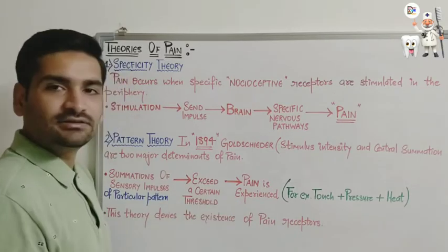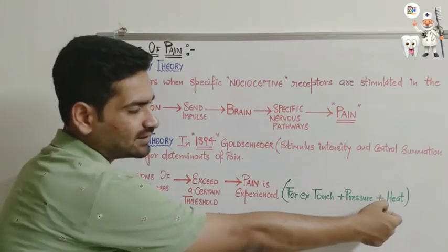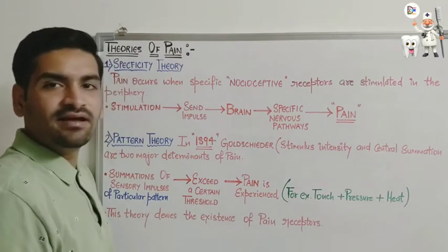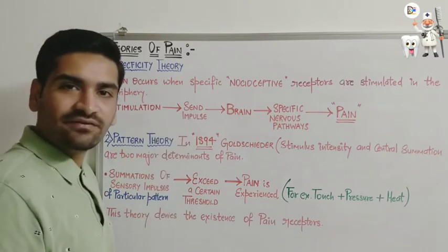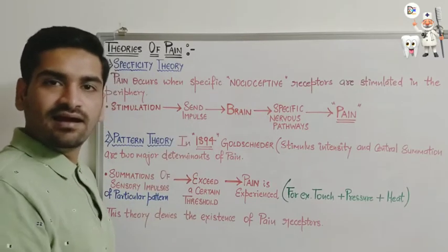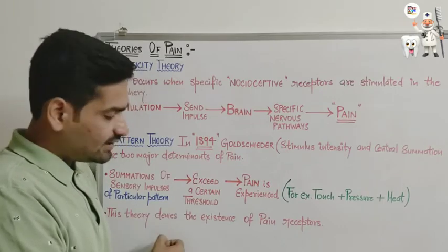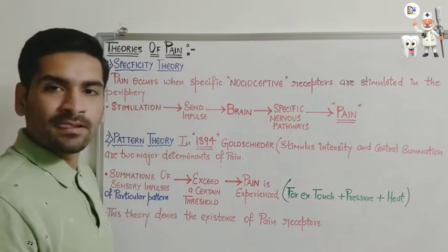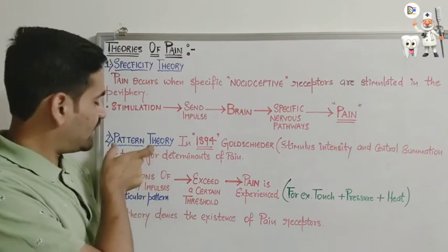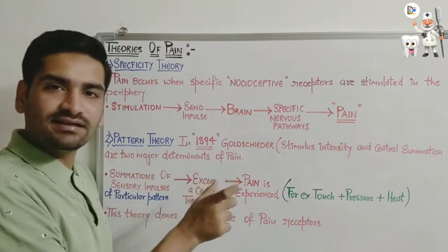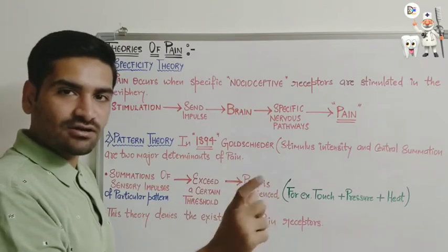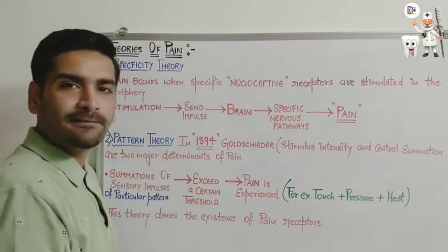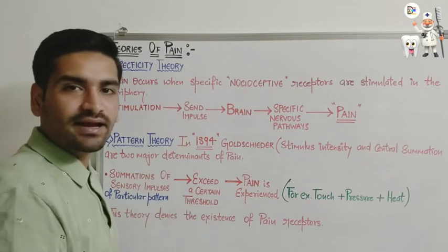Summation of sensory impulses — add all sensory impulses of a particular pattern which will exceed a certain threshold, then pain is experienced. For example, touch plus pressure plus heat will be experienced as pain. This theory denies the existence of pain receptors, unlike the specificity theory where peripheral nerve endings are considered to be the receptors. So this was about the specificity theory and the pattern theory — a pattern of impulses whose intensity and summation together cross a certain threshold, and pain will be experienced. Next we'll discuss the gate control theory.